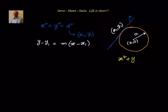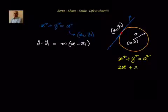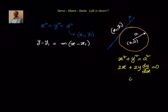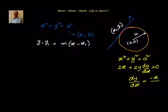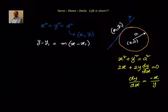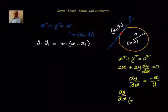We have x² + y² = a². Now we will differentiate with respect to x. We get 2x + 2y·(dy/dx) = 0, so dy/dx = −x/y. The 2s cancel, giving us dy/dx = −x/y. Now, we want the slope at that particular point, so dy/dx at (x1, y1) = −x1/y1.